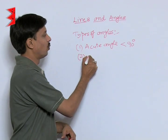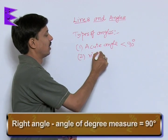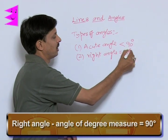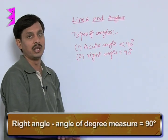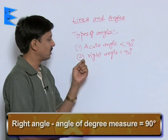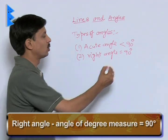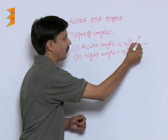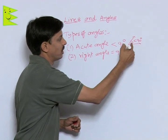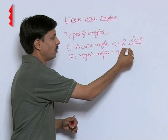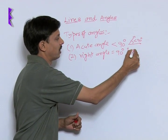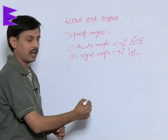Acute angle, then what is the right angle? In fact, an angle of degree measure exactly equal to 90 degree is known as the right angle. If I show you, this is the angle which is definitely less than 90 degree so it is the acute angle. If you make two rays exactly inclined at 90 degree it is the right angle.